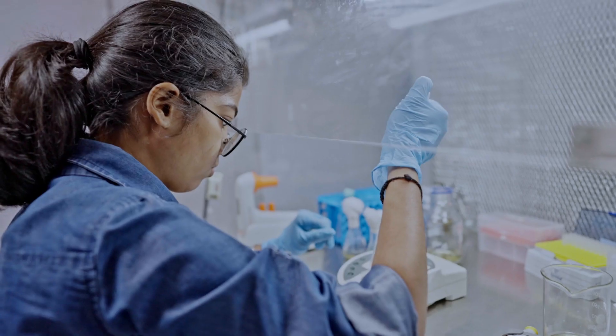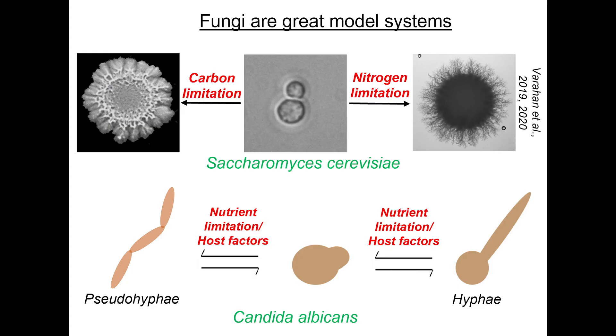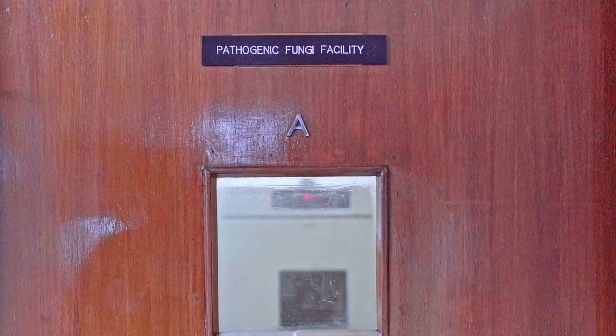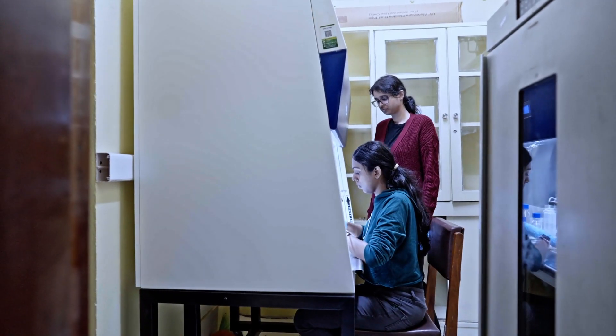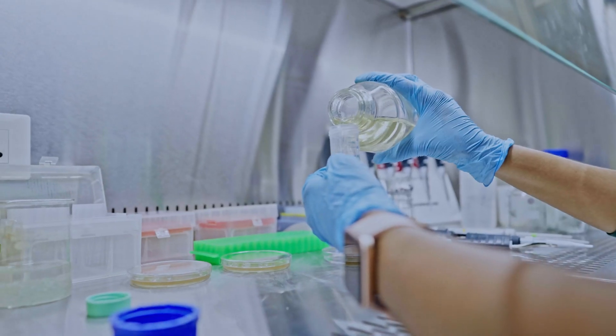In order to understand how metabolism orchestrates these cell state transitions, we use fungi as model systems. Fungi are exemplary model systems to understand this question, as they exhibit a remarkable spectrum of cell state transitions under fluctuating environments. We use simple fungal model systems like Baker's yeast, as well as pathogenic fungal model systems like Candida albicans and Cryptococcus neoformans, which cause infections primarily in immunocompromised individuals.